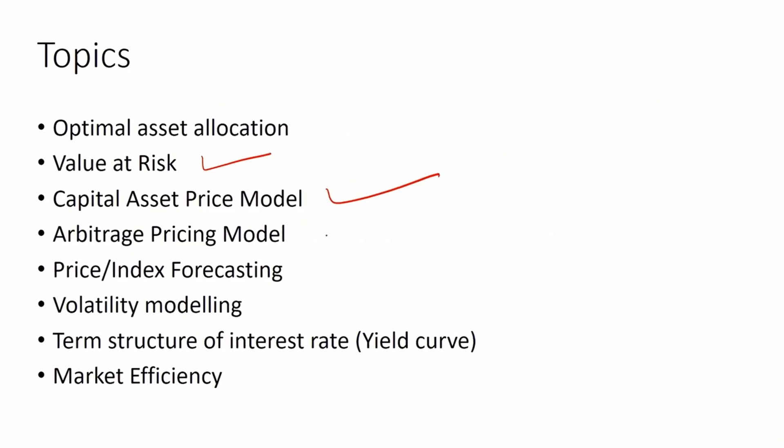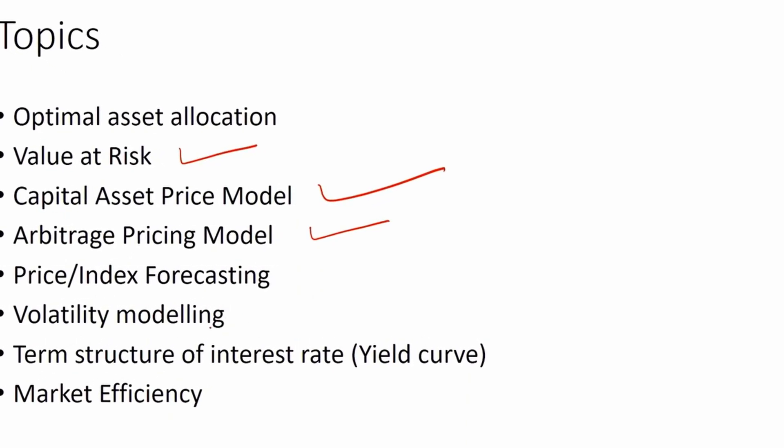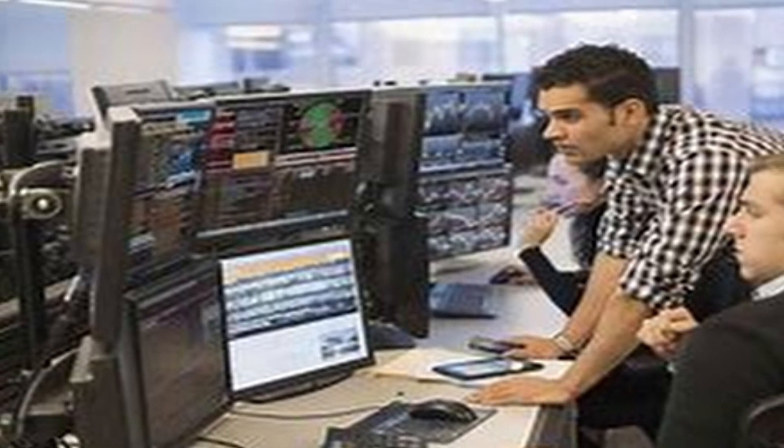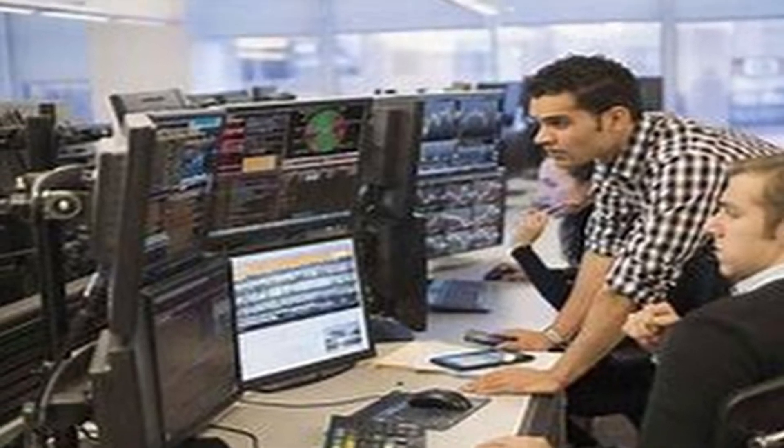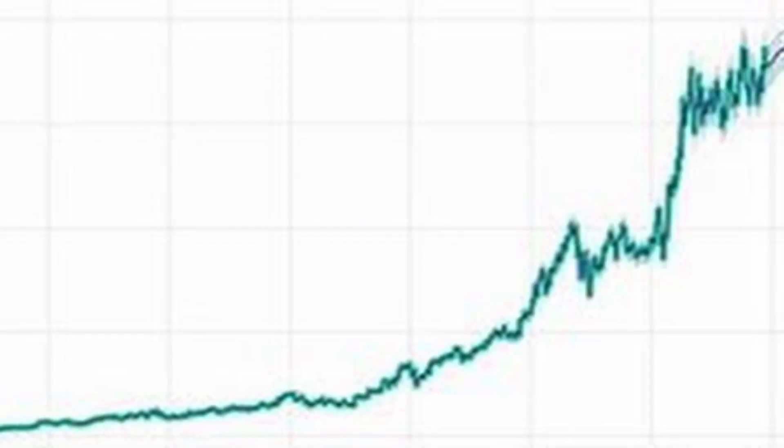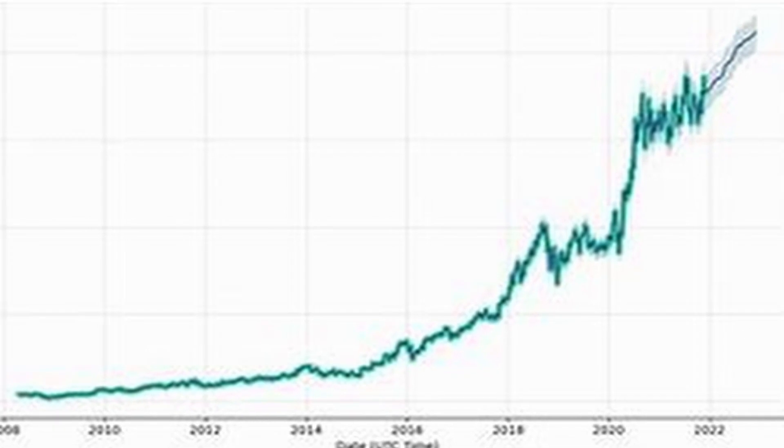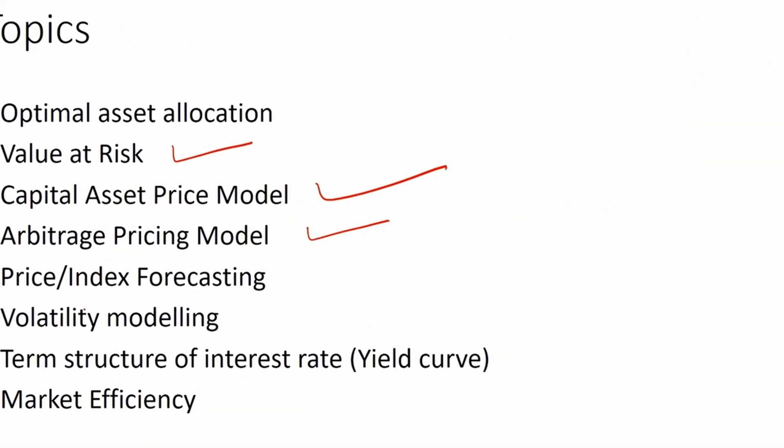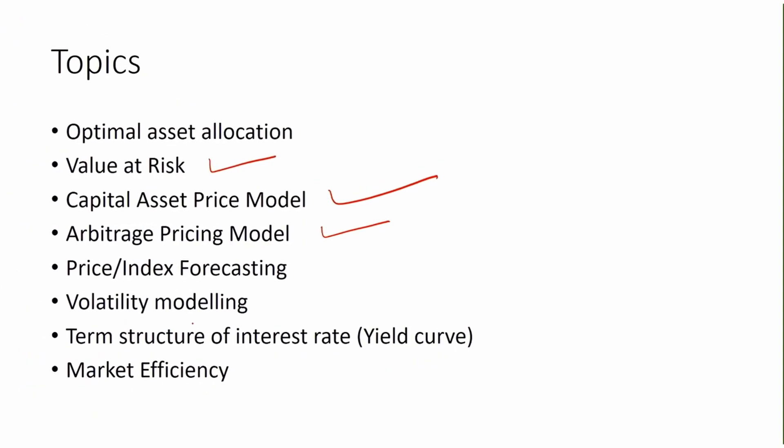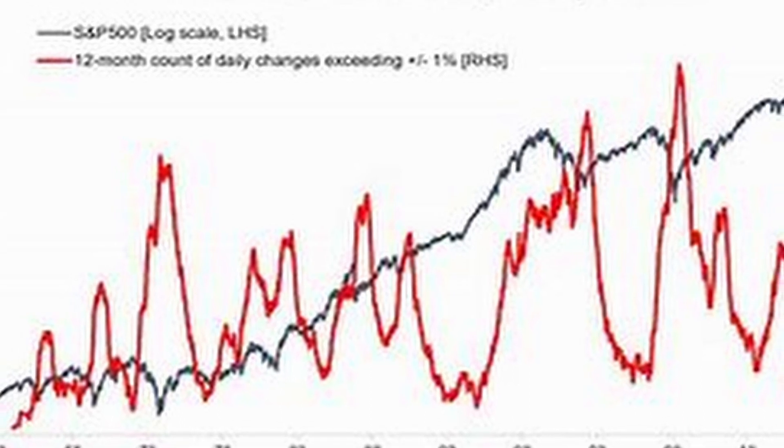Traders take advantage of that difference and make money out of it. We use financial econometrics in forecasting different financial data, be it forex, stock prices, or stock indices. We use financial time series for that.